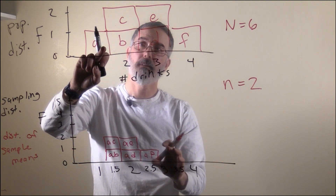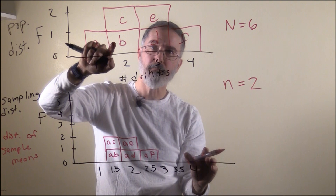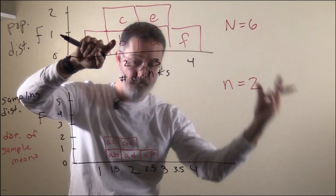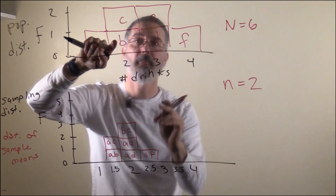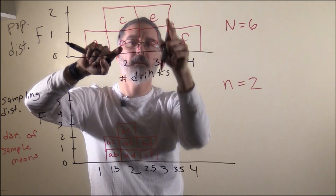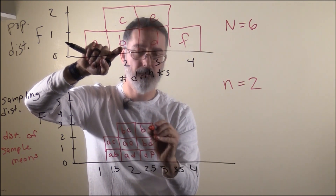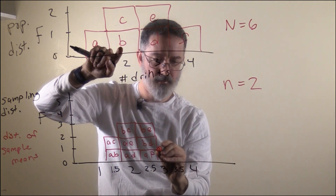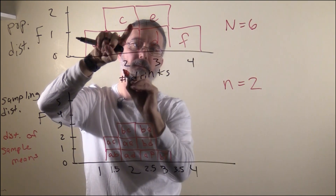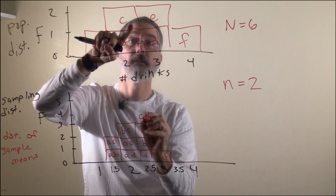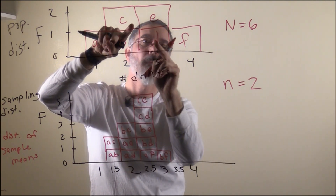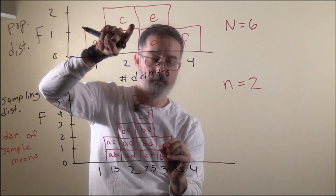Remember, we are doing all possible combinations of 2, and we have done every one with A. Now we move on to B. B and C both have values of 2, so the average of 2 and 2 is 2. B and D averages 2.5. B and E is also an average of 2.5. B and F — scores of 2 and 4 — averages 3. Now moving to C: C and D is a 2 and 3, averaging 2.5. C and E is also 2.5. And C and F averages 3.